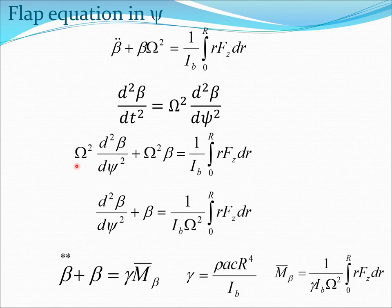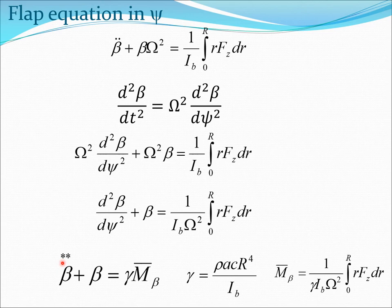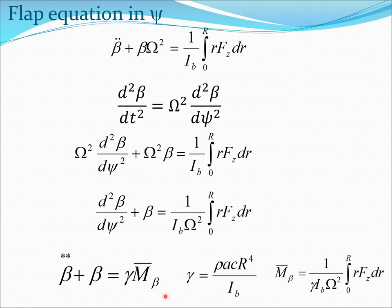After dividing by Ω², we get the flapping equation in terms of psi. In rotor dynamics, d-beta/d-psi is denoted with a prime (star notation), where a dot means differentiation with respect to t and a prime/star means differentiation with respect to psi. The right-hand side is expressed in terms of the Lock number gamma and the aerodynamic moment coefficient m-beta-bar.